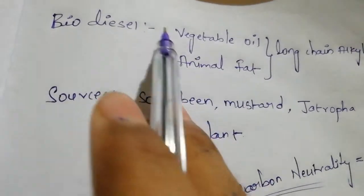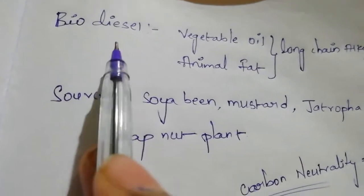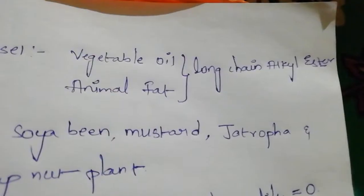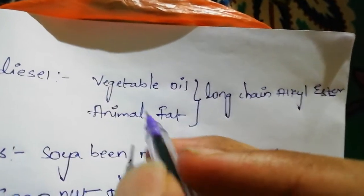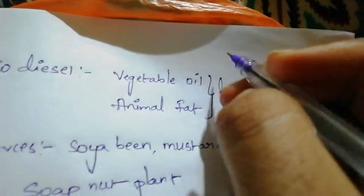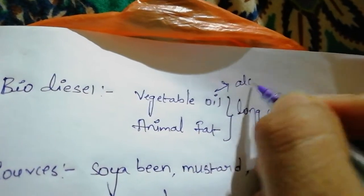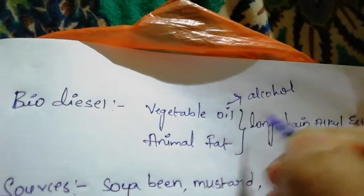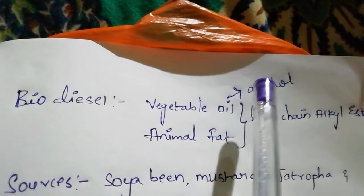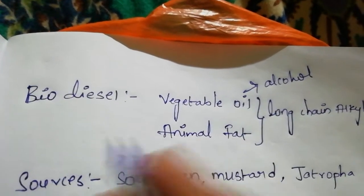Vegetable oil is converted into biodiesel — this process is known as transesterification. We react this vegetable oil with alcohol. When we react vegetable oil with alcohol, it produces biodiesel.